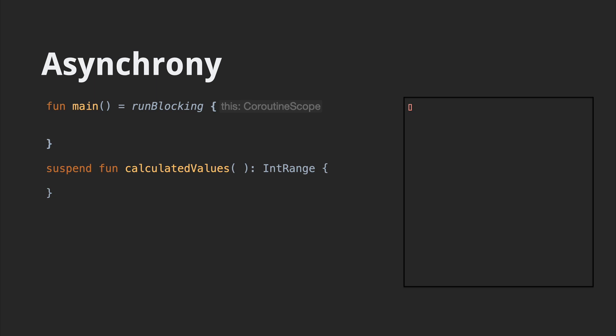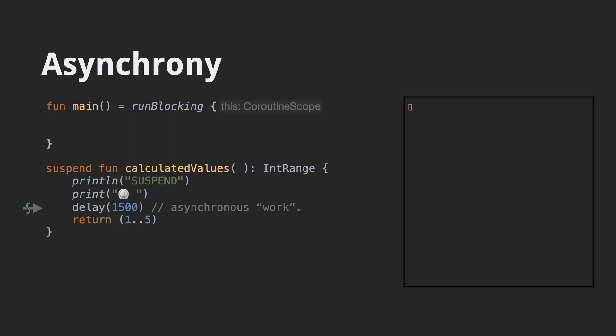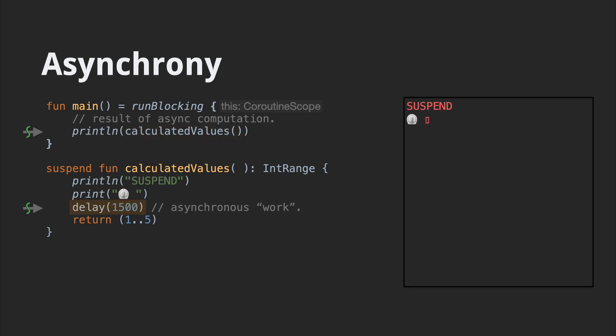Let's add a suspending function called calculated values. It'll return an int range. To simulate work, we add a call to delay in there. We complete the function by returning the actual int range, and then we call this suspend function from our run block. Execution runs right up to the delay call, where it suspends to wait for about 1500 milliseconds. Execution then resumes, and our main function completes by printing out our computation result.